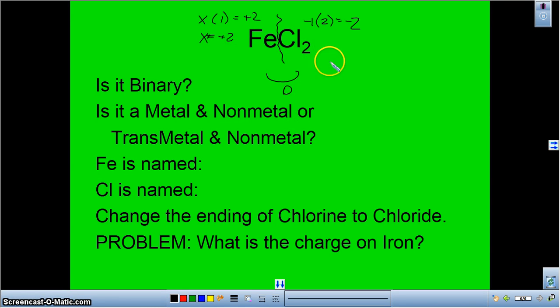So the way I'm going to write this is I'm going to say iron, Roman numeral 2, and then I change my ending of chlorine to chloride. And this does not indicate how many iron we have. This indicates the oxidation state or the charge on that iron ion.